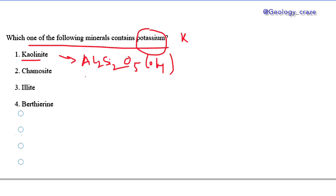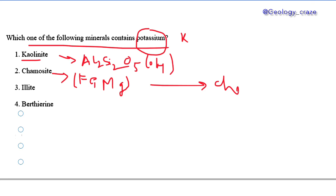The next mineral is chlorite, which is enriched in Fe and Mg. It is related with the chlorite group.